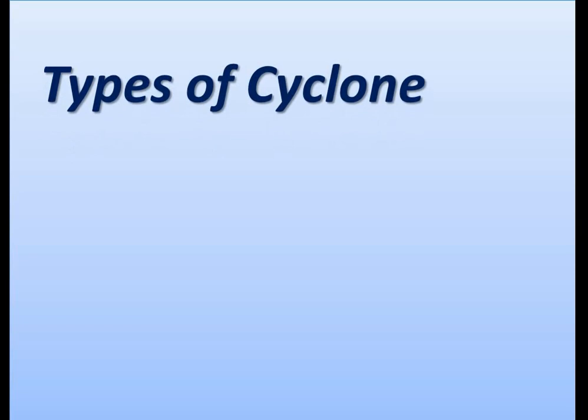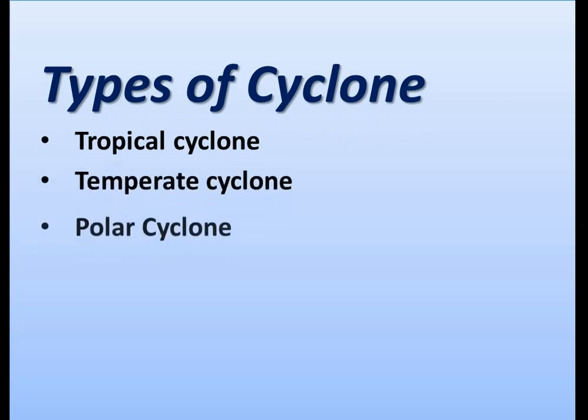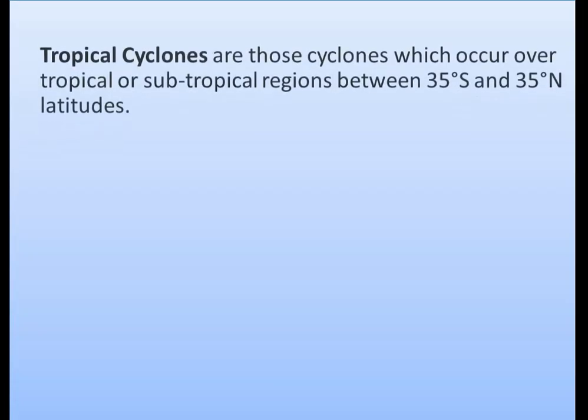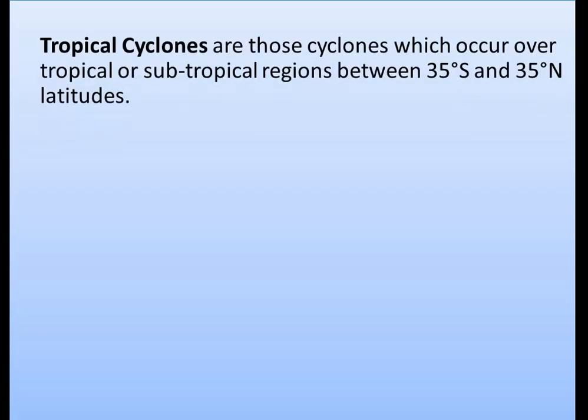There are many types of cyclones, but here we are going to discuss tropical cyclones, temperate cyclones, polar cyclones, and mesocyclones. Tropical cyclones are those cyclones which occur over tropical or subtropical regions, between 35 degrees south and 35 degrees north latitudes. As the name suggests, they form in tropical or subtropical regions.